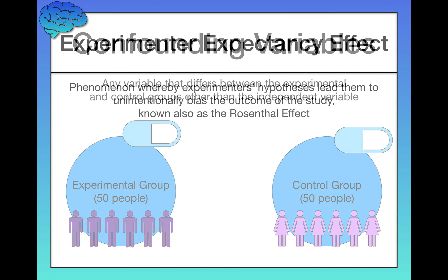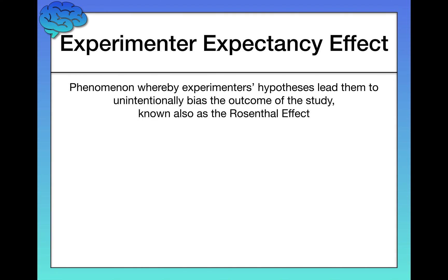One more thing to be aware of when doing an experiment is the experimenter expectancy effect — the phenomenon whereby experimenters' hypotheses about the study lead them to unintentionally bias the outcome. This goes by many names, one of the most famous being the Rosenthal effect, named after a classic study that helped us identify that this effect exists.